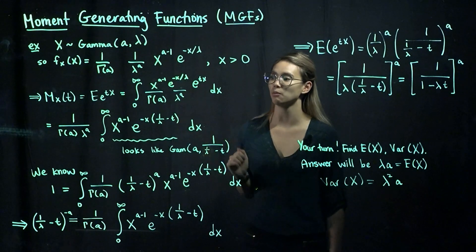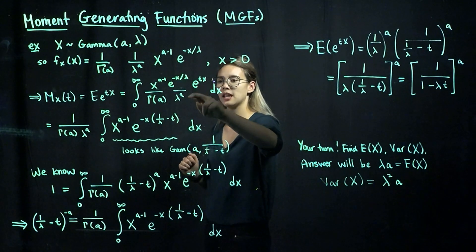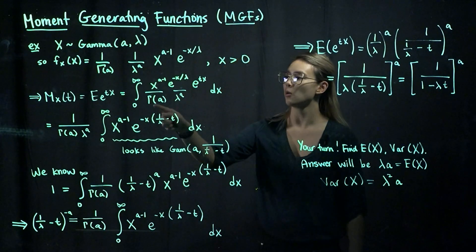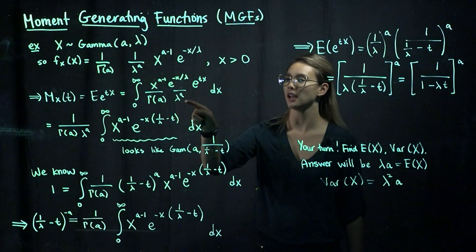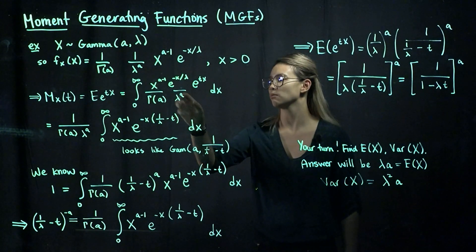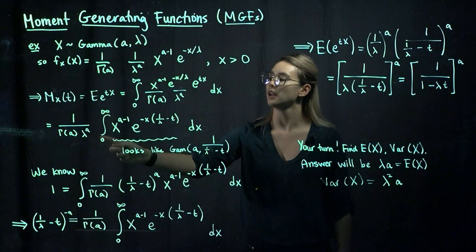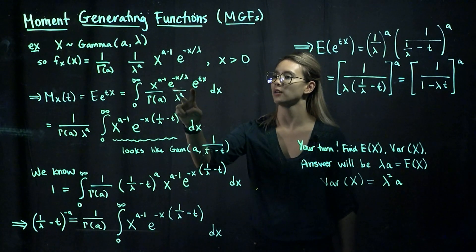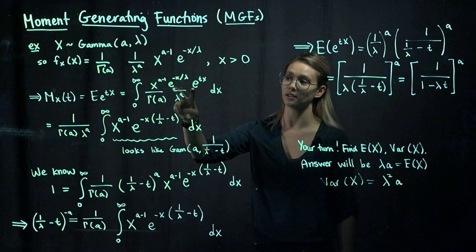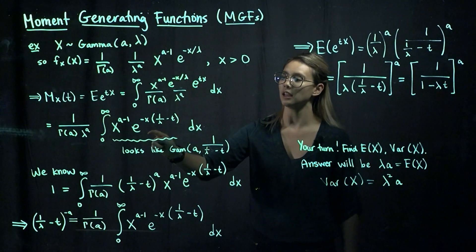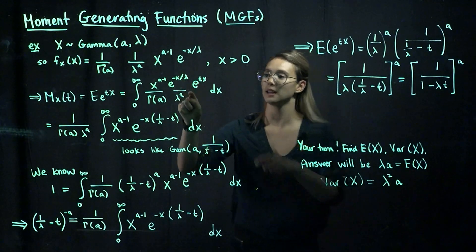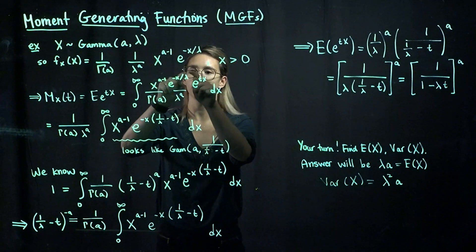Now we're going to move forward, crunching some numbers. Let's take out the things that are not a function of x to clean up the integral a little bit: the gamma function of a and lambda to the a. Pulling those out of the integral, we now have the integral from 0 to infinity of x to the a minus 1. Then we have two exponential terms, so let's combine the exponents: e to the negative x times 1 over lambda minus t.